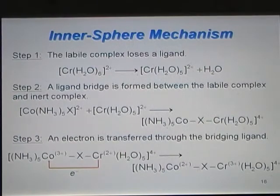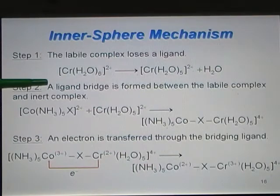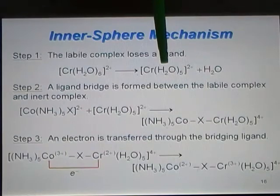In the first step, the labile complex loses a ligand. Cr H2O6 2+ is the labile complex, so it must lose a ligand, forming a 5-coordinate intermediate.